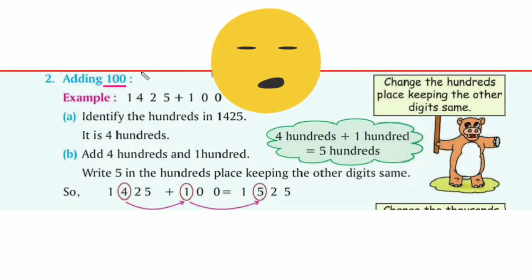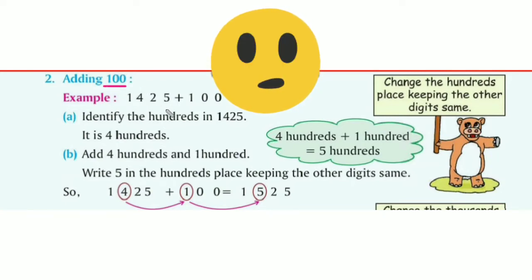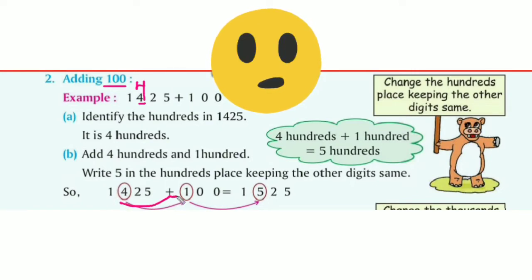Adding hundreds is the same as adding tens. We need to find the hundreds in the given number. See the example: 1425. Identify the hundreds — it is 400. Now we add hundreds only: 400 plus 100 equals 500. We change only the hundreds place, keeping all other digits the same. So 400 plus 100 equals 500.